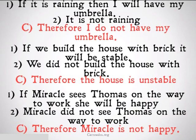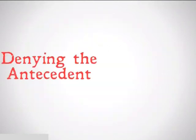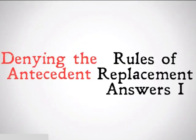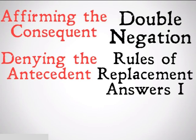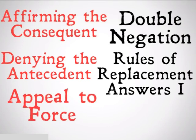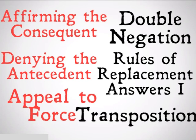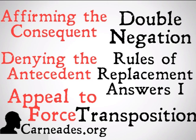So we should be able to see that this is going to be a fallacy. That was denying the antecedent. Also, today we did rules of replacement answers one. Yesterday was affirming the consequent and double negation. Next time is going to be appeal to force and transposition. Watch a new video every single day for a hundred days here at carneades.org and stay skeptical, everybody.